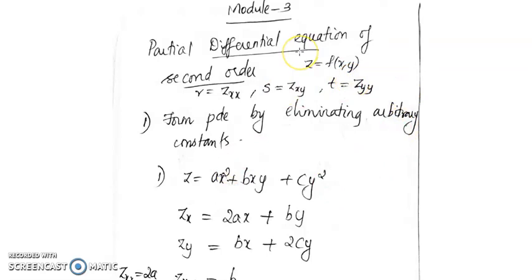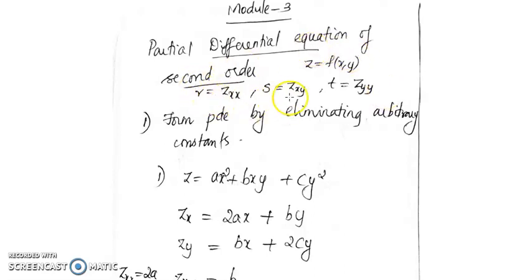For a function z = f(x, y), we use P and Q to represent the first order derivatives with respect to x and y. So P is z_x and Q is z_y. R represents z_xx, S represents z_xy (or z_yx), and T represents z_yy. We will use R, S, and T to denote the second order partial derivatives.